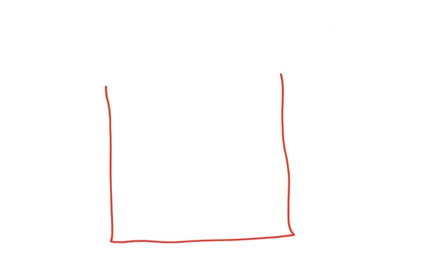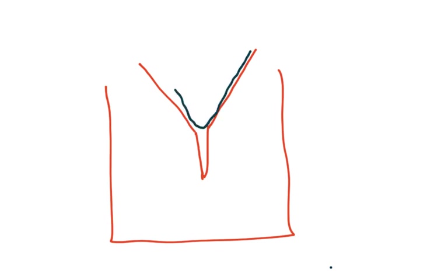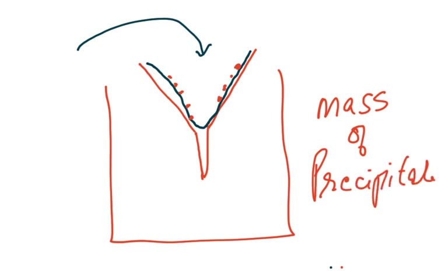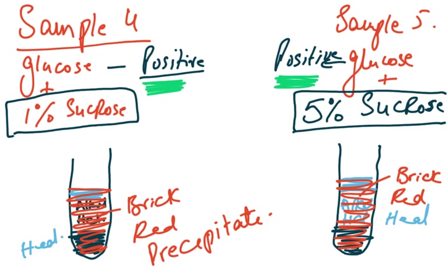To objectively compare the samples, take a beaker, place a funnel on top, and line the funnel with filter paper. Pour each solution through the funnel separately. The brick red precipitate will settle out onto the filter paper. The sample with only 1% sucrose will produce less precipitate mass, while the sample with 5% sucrose will produce more.